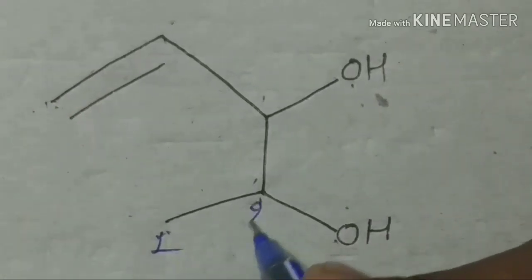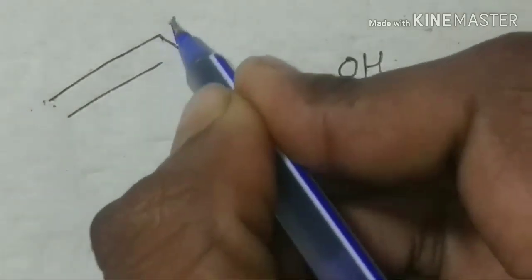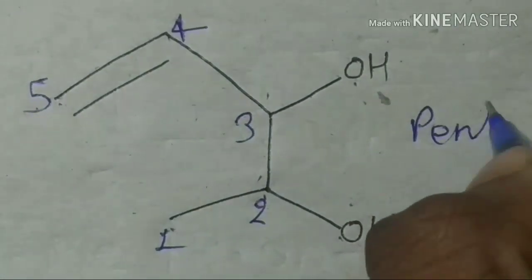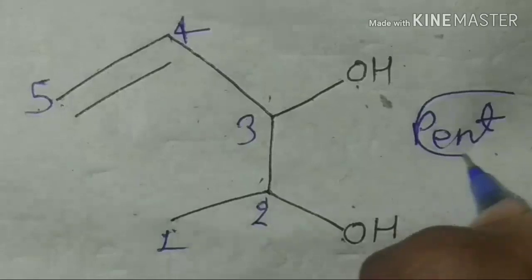So let's start this. One, two, three, and four, and five. Five carbon chains. We got alkane. What is alkane? Pent. Pent. We got alkane.